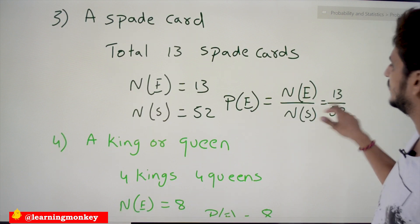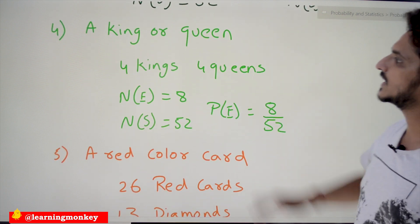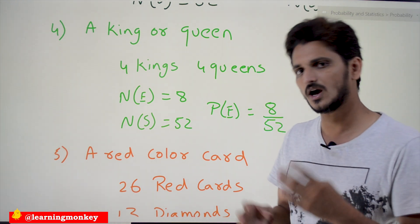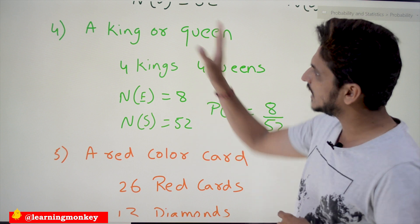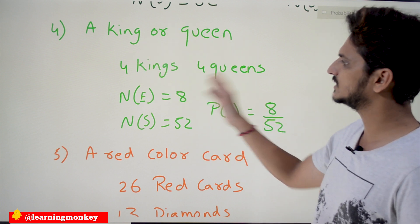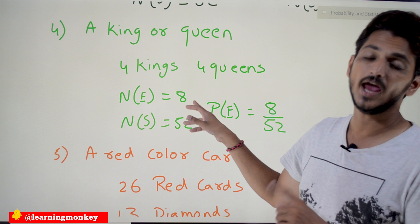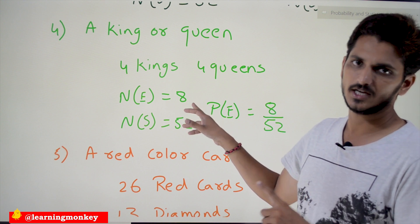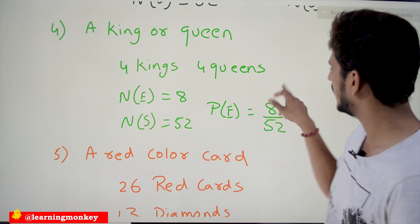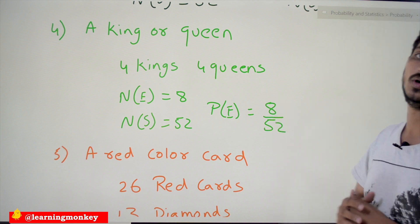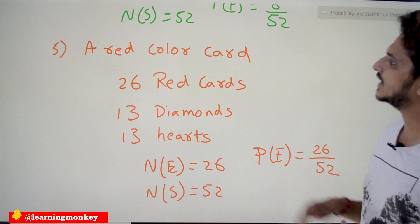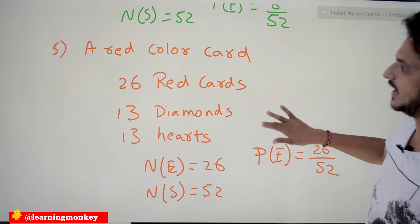Next: what is the probability the card is a king or a queen? There are four kings and four queens. It should be either a king or a queen, so the number of elements in our event is 8. Number of elements in our sample space is 52, so the probability is 8/52.